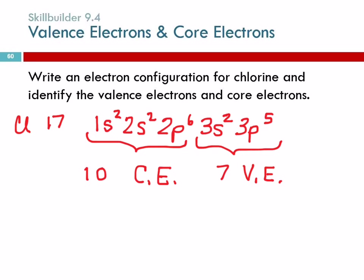What group on the periodic table is chlorine in? 1A, 2A, 3A? 7A. It's in group 7A. It has 7 valence electrons. Not a coincidence.